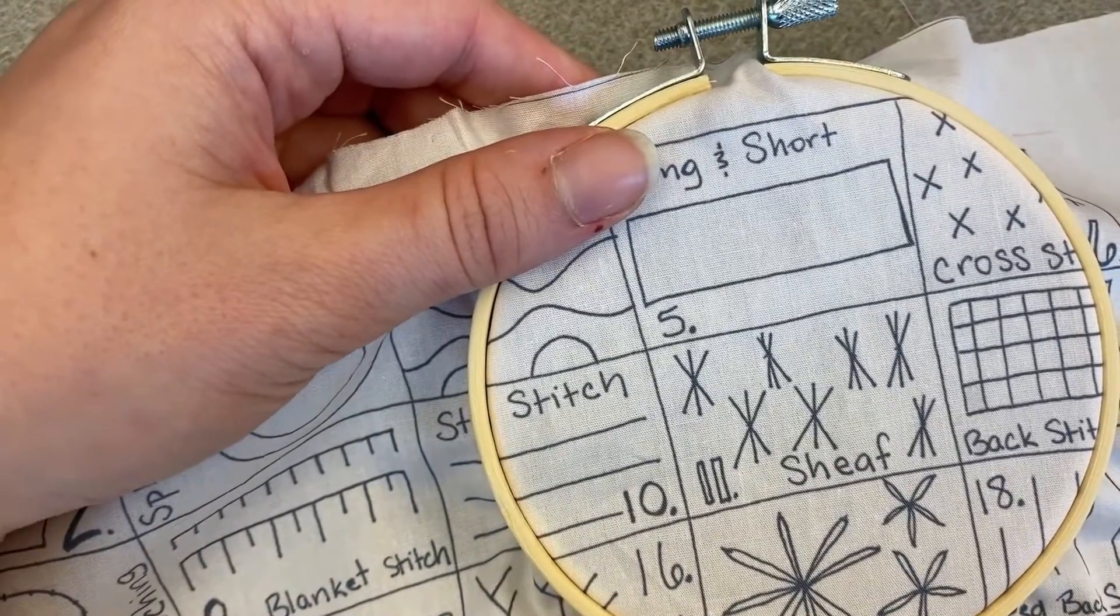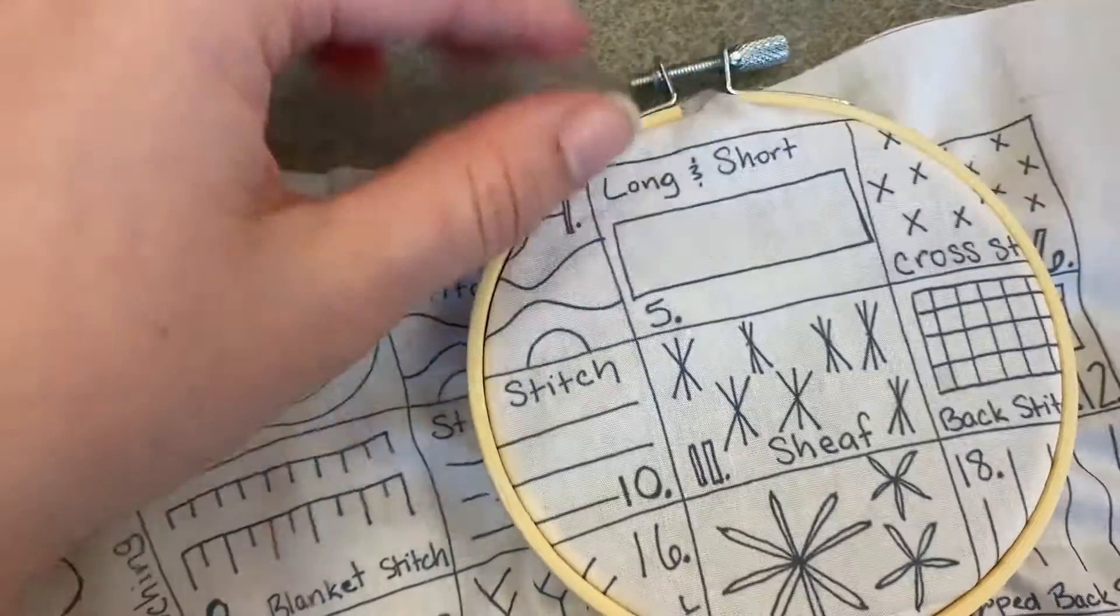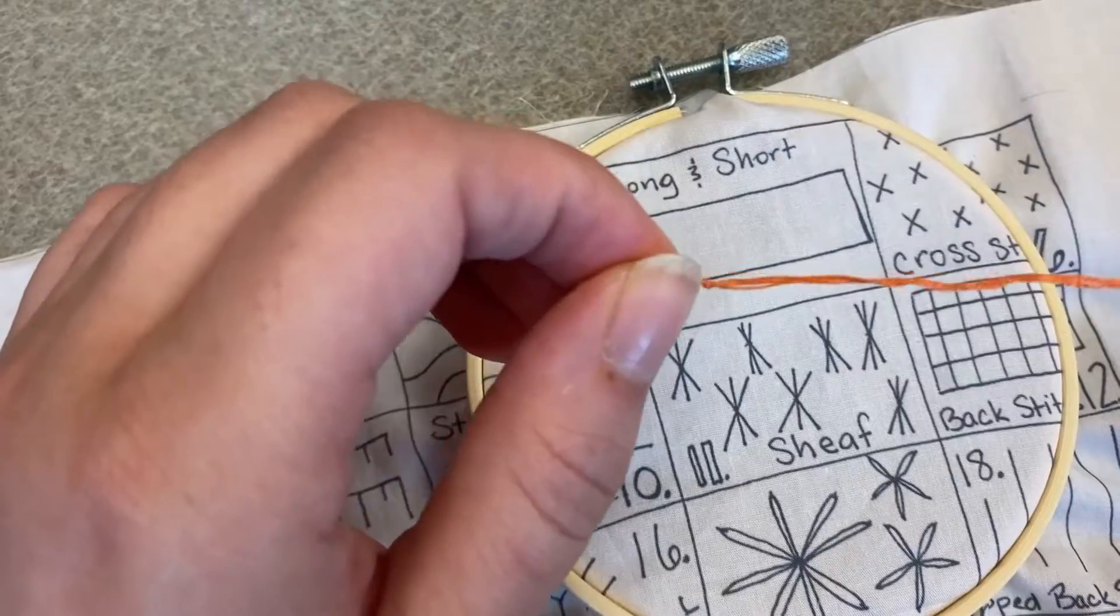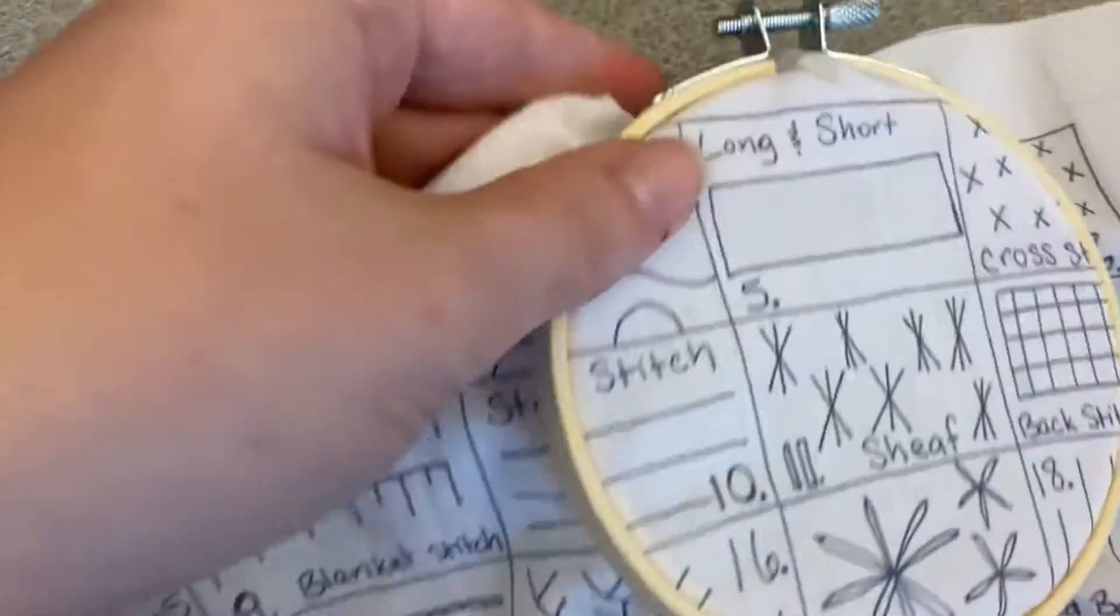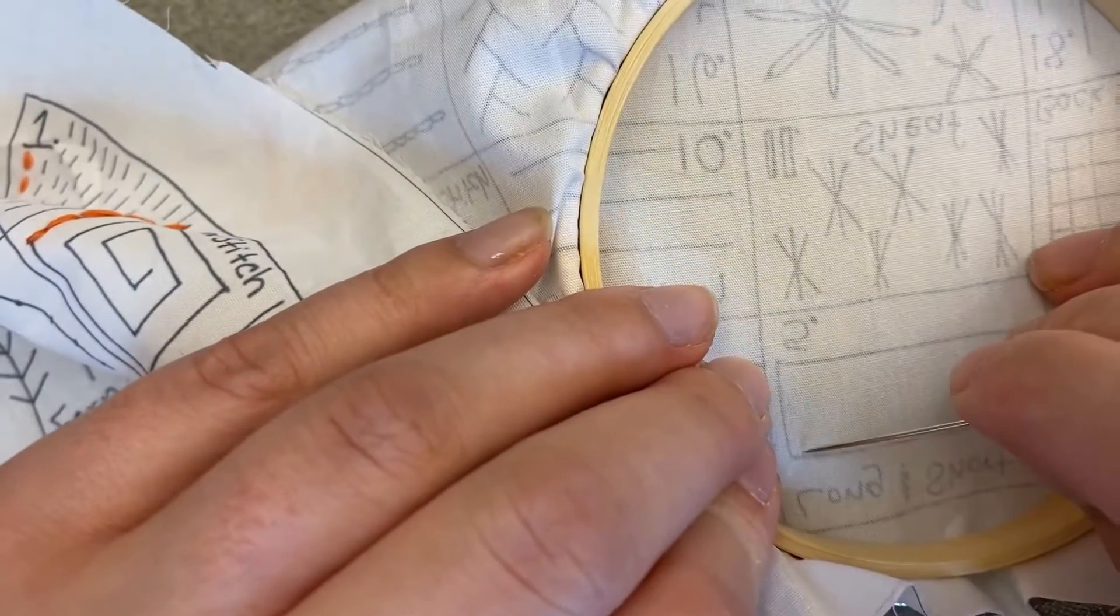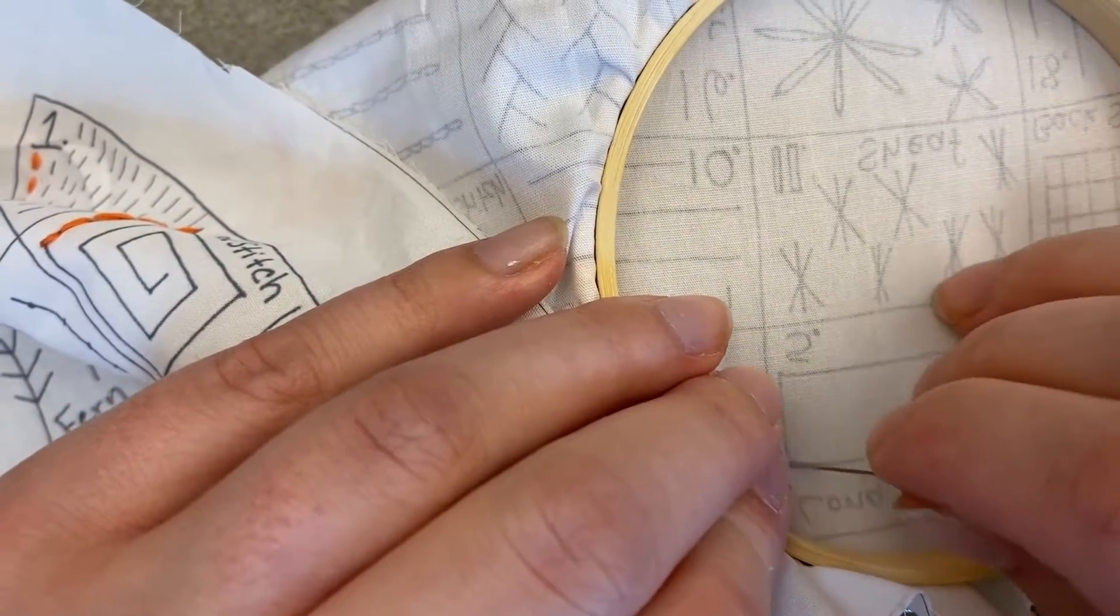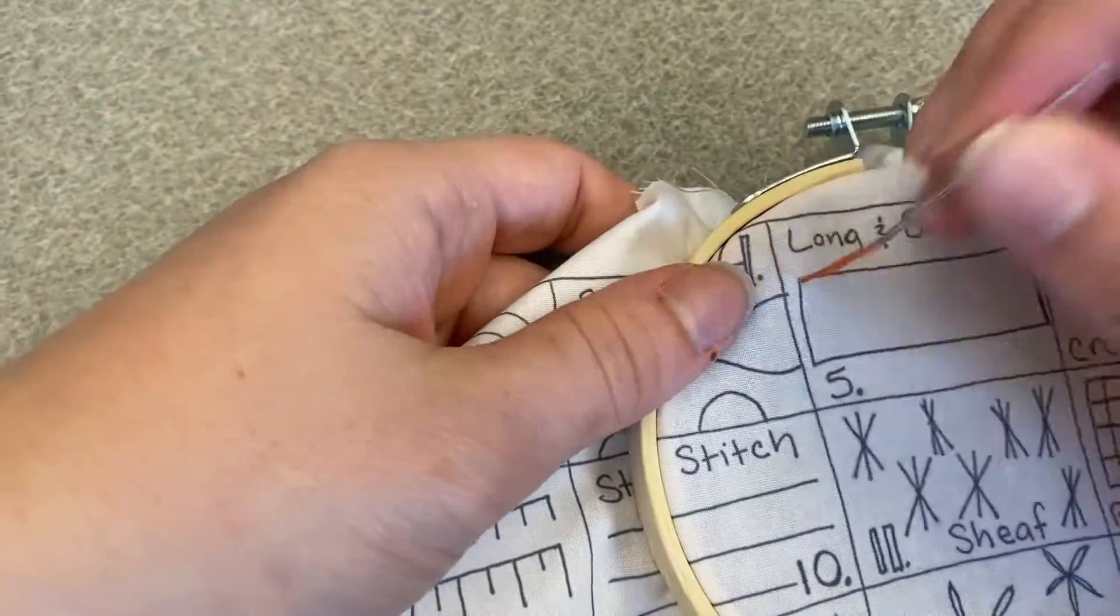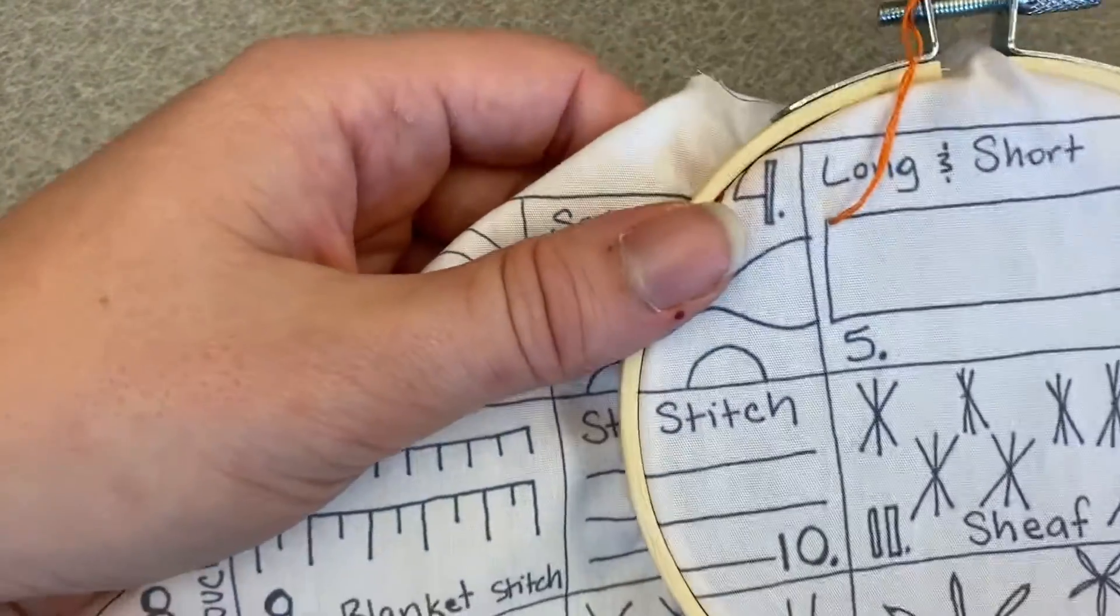So what you're going to do is you're going to thread your needle, double knot the ends, and then once that's ready, you're going to take your needle and pull it through your fabric.